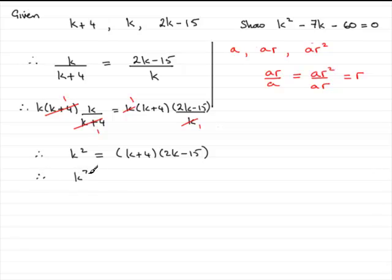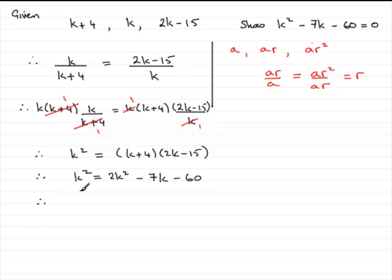Expanding the brackets: k times 2k gives 2k squared, k times minus 15 gives minus 15k, plus 4 times 2k gives plus 8k — so that's minus 7k combined — and 4 times minus 15 is minus 60. If I subtract k squared from both sides, 2k squared minus k squared leaves k squared, giving k squared minus 7k minus 60 equals 0.